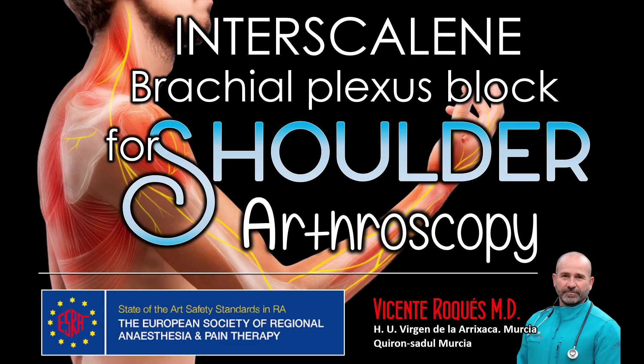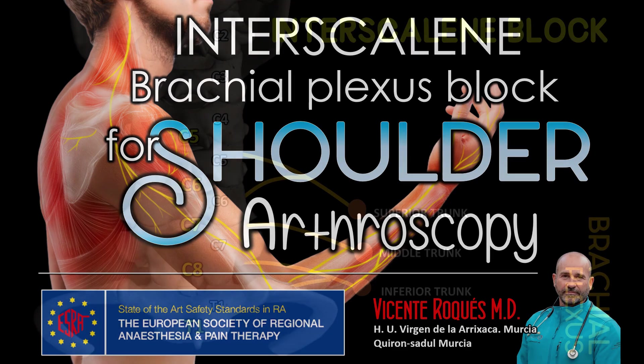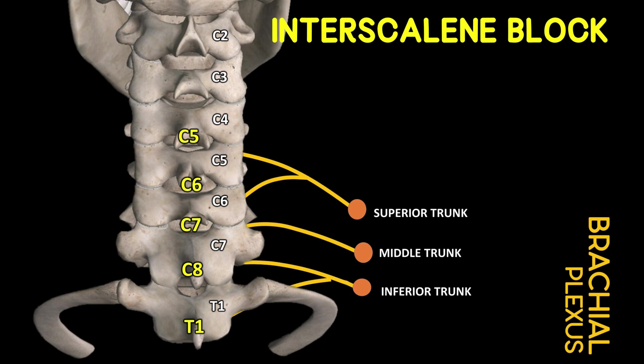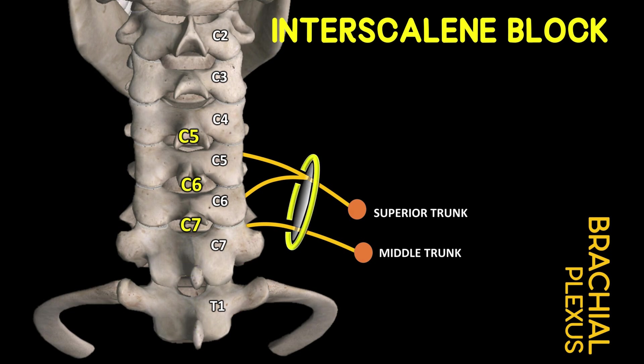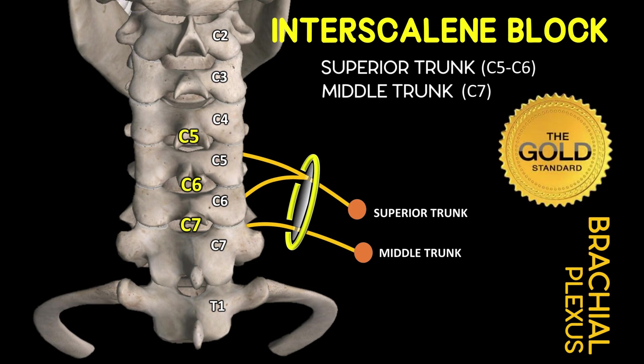Hello ladies and gentlemen. On this occasion we will describe how we perform the interscalene block — the gold standard for shoulder surgery — as a sole technique for shoulder arthroscopy. The interscalene brachial plexus block is the most widely used post-operative analgesic technique for shoulder surgeries. It not only provides excellent post-operative analgesia but also reduces pain scores and opioid consumption. It involves injection of a local anesthetic agent into the interscalene groove, the space between the anterior and middle scalene muscles in the neck, and this block specifically targets the superior trunk (C5 and C6) and the middle trunk (C7).